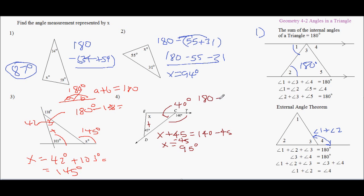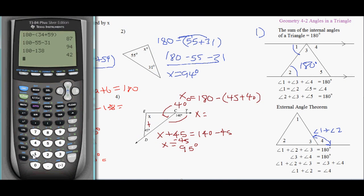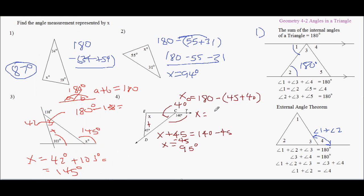And then, if I just use my first theorem, 180 minus 45 plus 40 will give me x. So x, if I take my calculator out, 180 minus 45 plus 40, and that's equal to 95. So either way, I get x equals 95. And we're done.